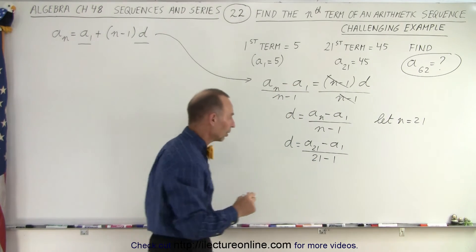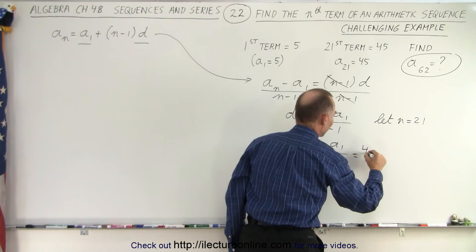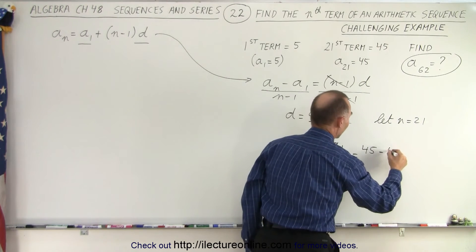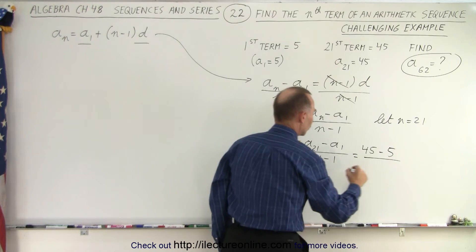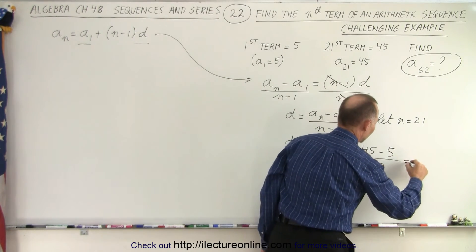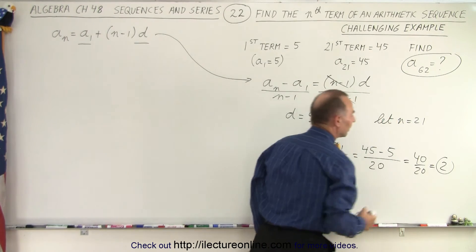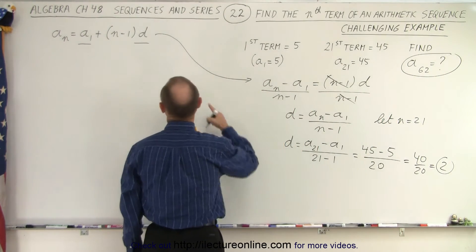And that will give us what we're looking for. So this is equal to A21, which is 45, minus A1, which is 5, divided by 21 minus 1, which is 20. So this is equal to 40 divided by 20, which is equal to 2. So now that we have the common difference, D,